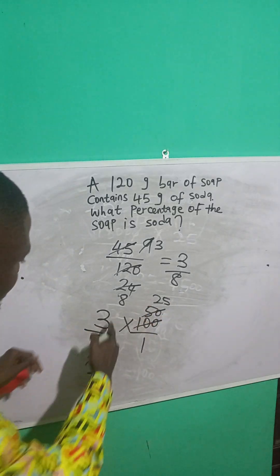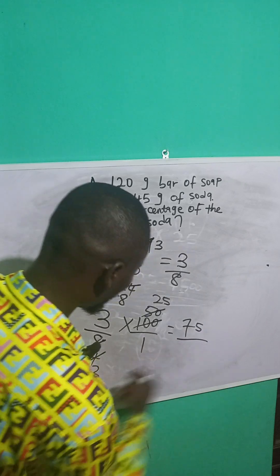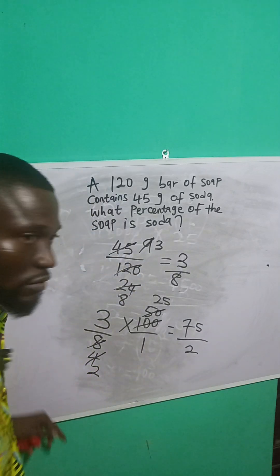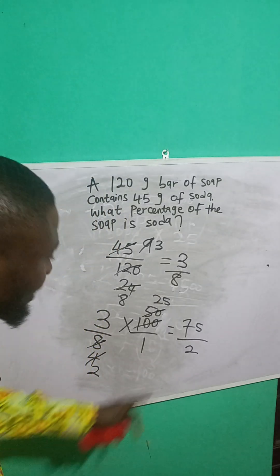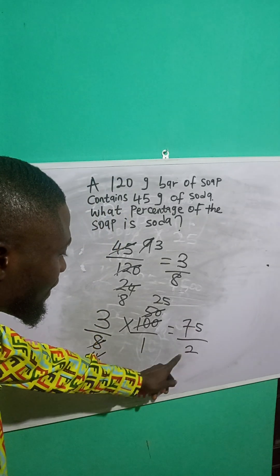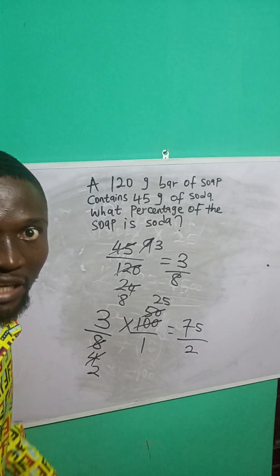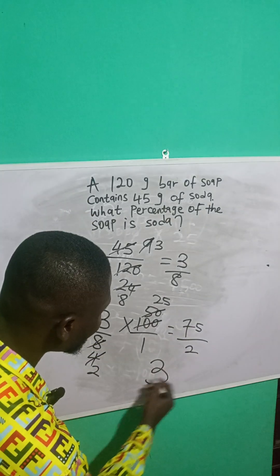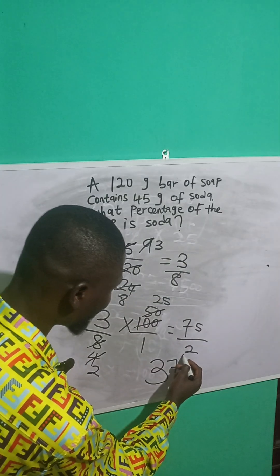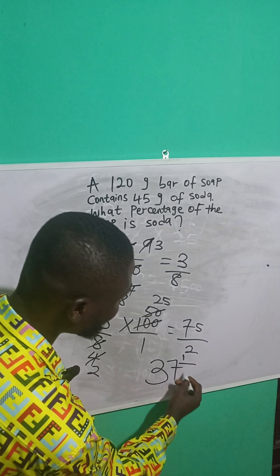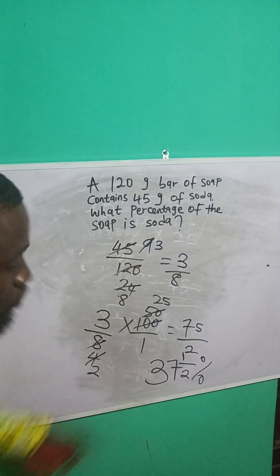Now 3 times 25 is 75, over 2. Now this 75 over 2, we can still go further to simplify it — to write it as a mixed fraction. If 2 people share 75 oranges, how many would they get? They would get 37 each and it would remain 1. So it is 37 and 1 over 2. Which is the denominator. So this is the percentage of soda: 37 and a half percent.